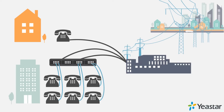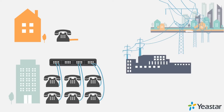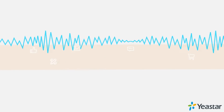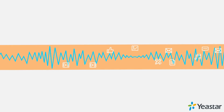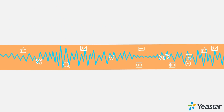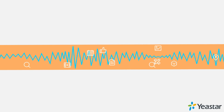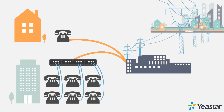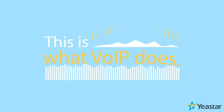Well, what if we switch the landline to the internet you are already using? In other words, all calls will go through the internet, sent to the service provider. This is what VoIP does.